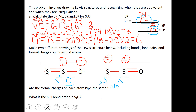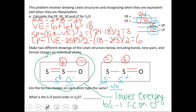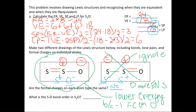Now, what is the S-O bond order in S2O? The structure on the left is the better representation because it is lower energy — the minus 1 formal charge is on oxygen, which is more electronegative than sulfur and can therefore bear the minus 1 charge better. So from this point on we ignore the structure on the right and focus only on our best structure, which shows one bond between sulfur and oxygen.